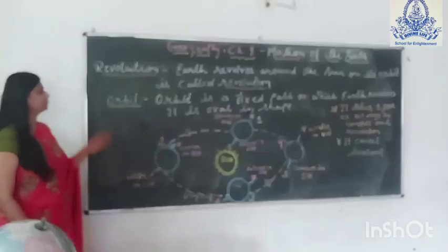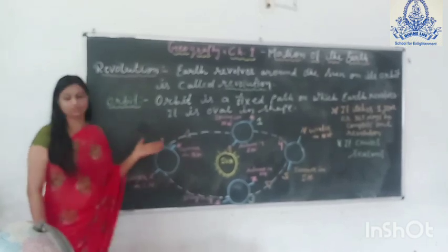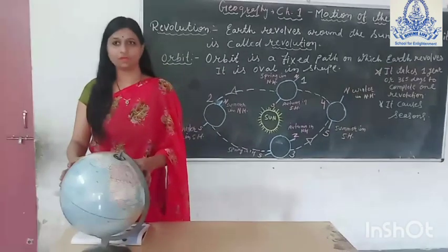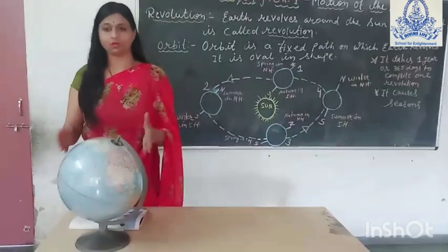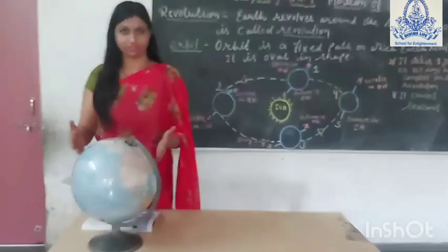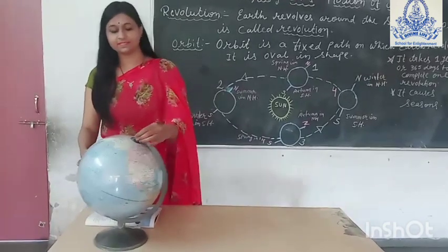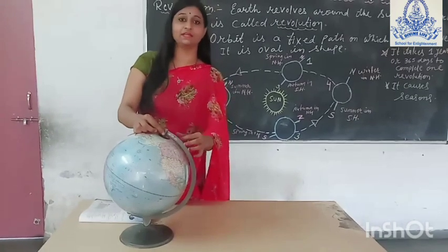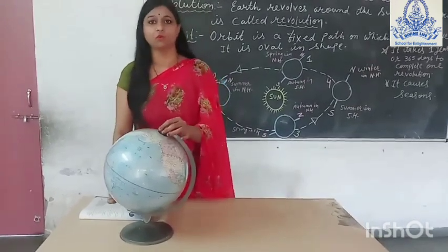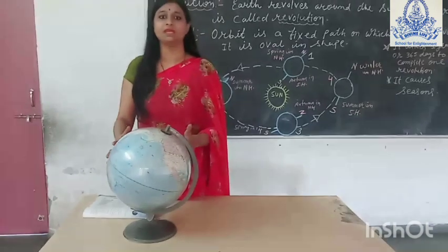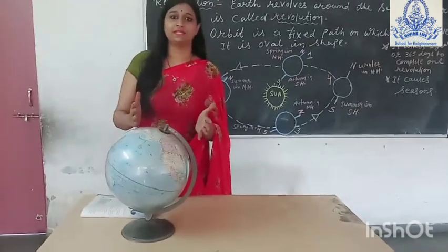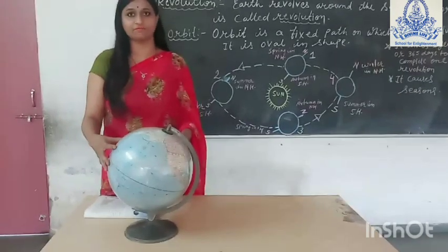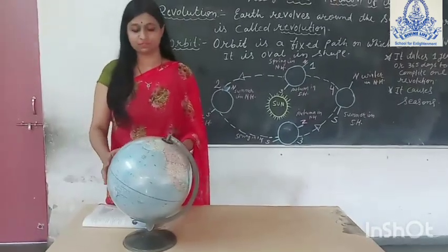Before we study about revolution, let us talk about the globe. The globe is the model of the earth. It has an axis. The axis is in a tilted form — it is not vertical. The axis of the globe is tilted, which means that different parts of the earth receive different amounts of sunlight, and this is what causes seasons.